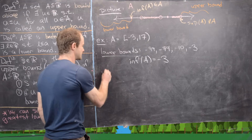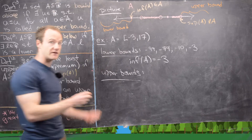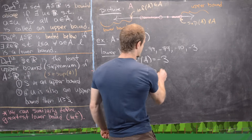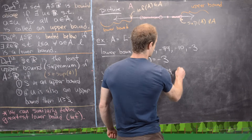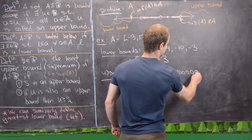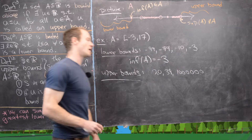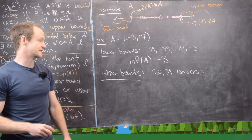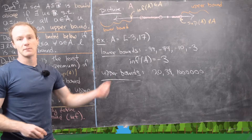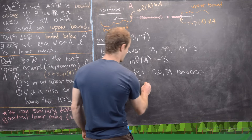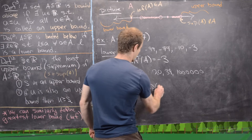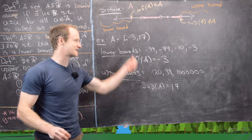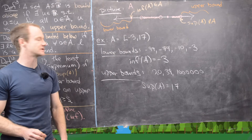Now let's look at upper bounds. There are infinitely many upper bounds: we could have 20, 39, a million — all bigger than every element from this set. But the least upper bound, the supremum, is equal to 17, because that's the smallest such upper bound.